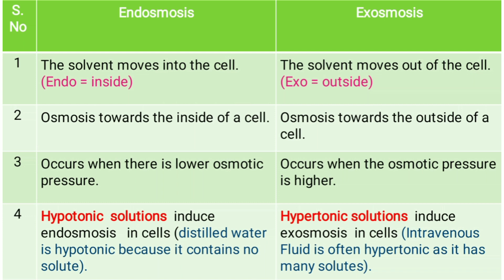Second difference: in endosmosis, osmosis occurs towards the inside of the cell. In exosmosis, osmosis occurs towards the outside of the cell.